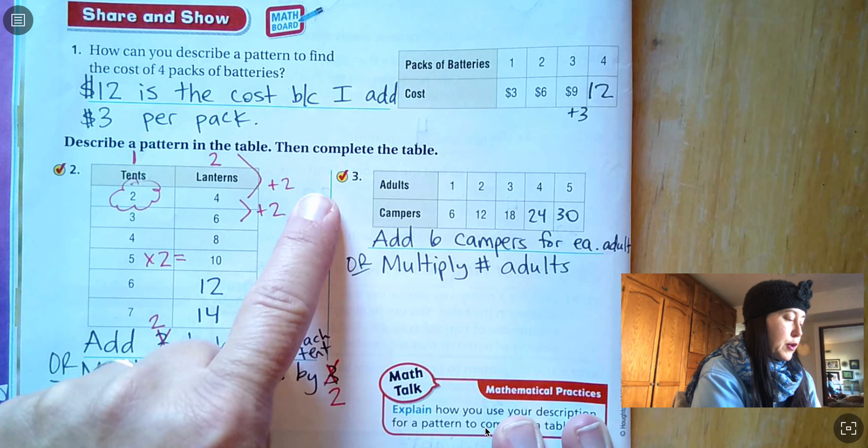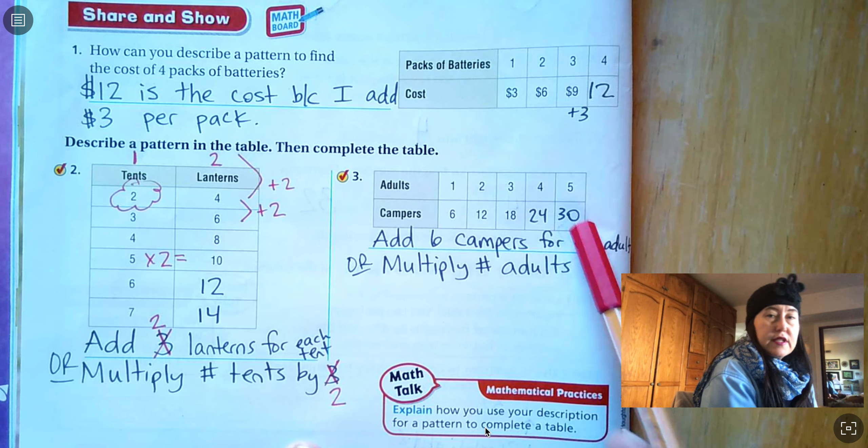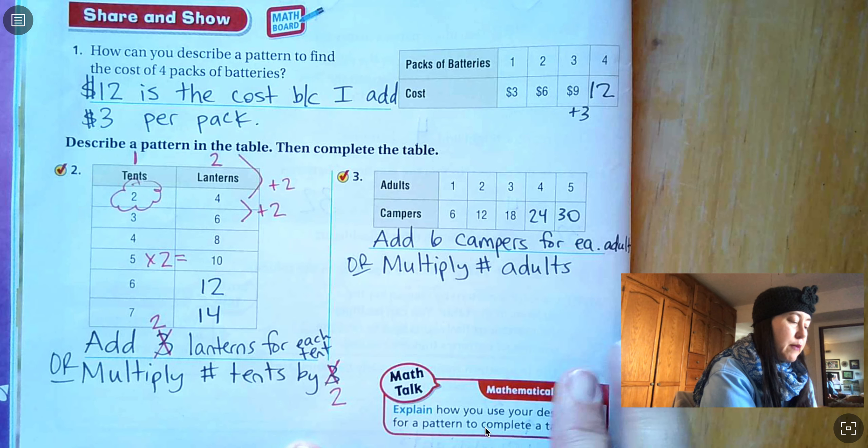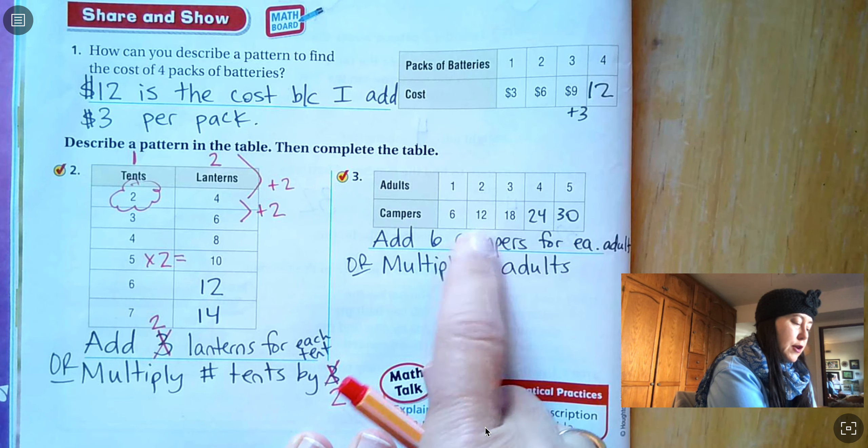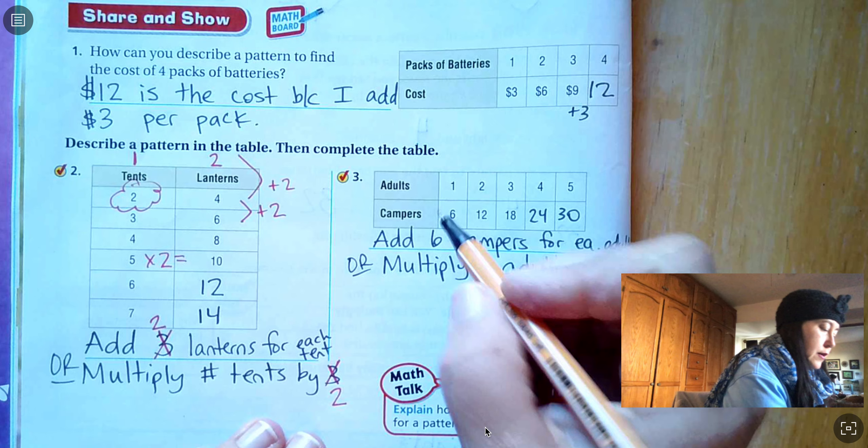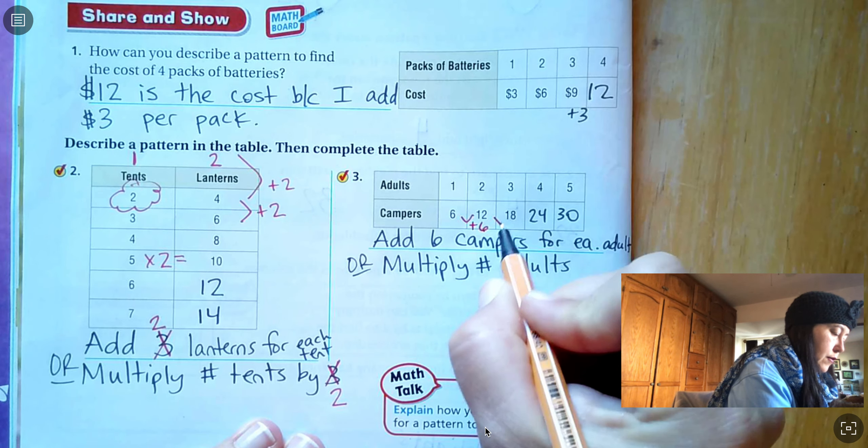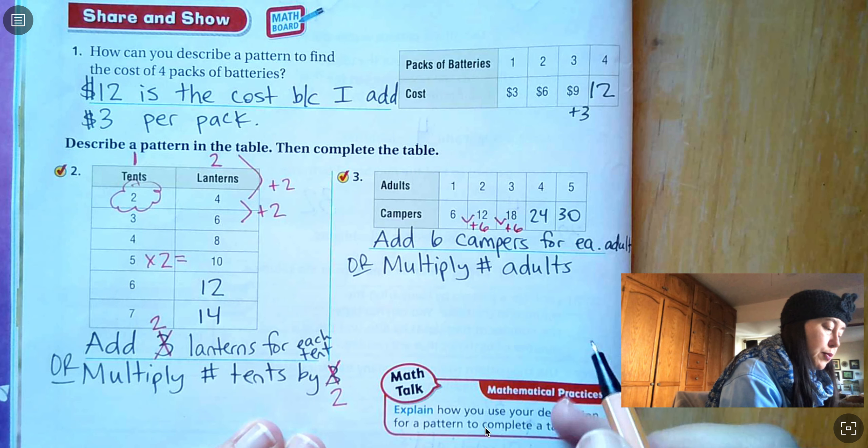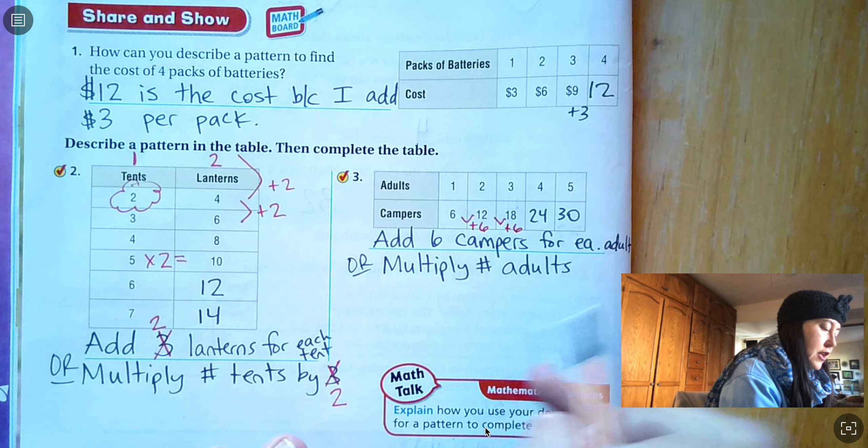So for number three, you see what you need to fill in. You could either add six campers for each adult, so each time you're adding six. Or you could multiply the number of adults by six. I forgot to finish my sentence. So five times six equals 30.